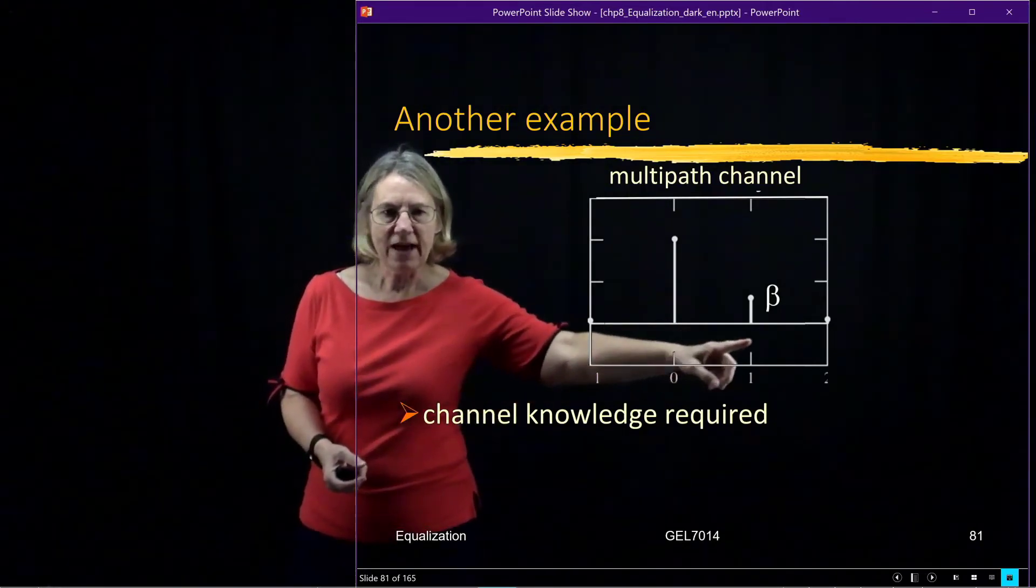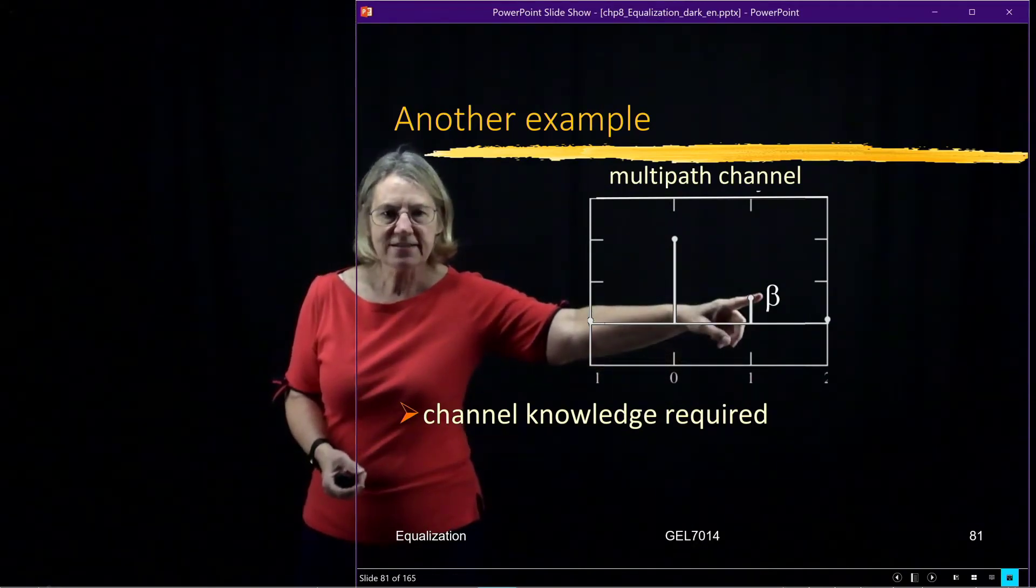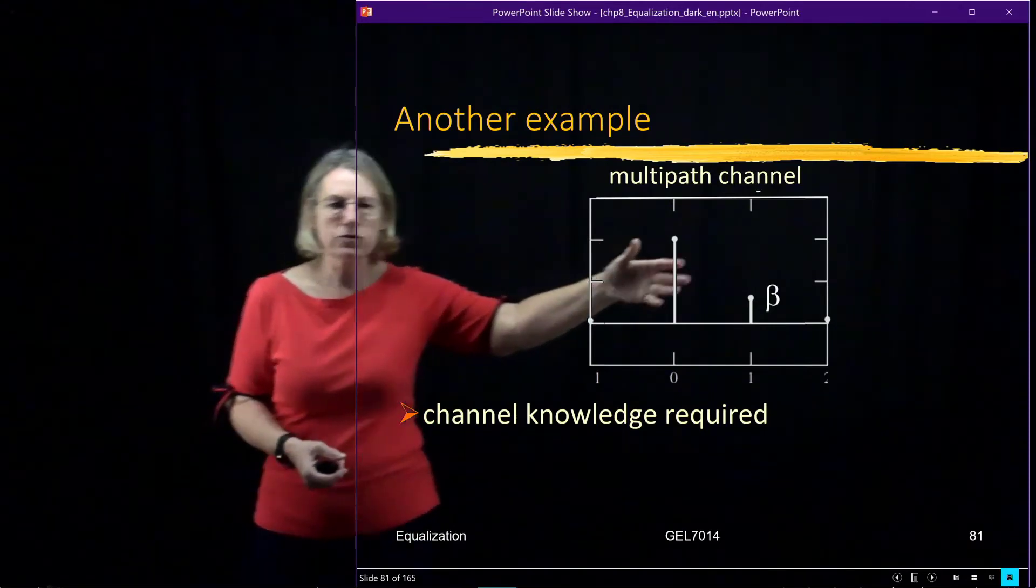We have the line of sight, direct path, and we have one that's delayed exactly by one symbol period. And it has some value where the signal was attenuated, which I'll call beta.